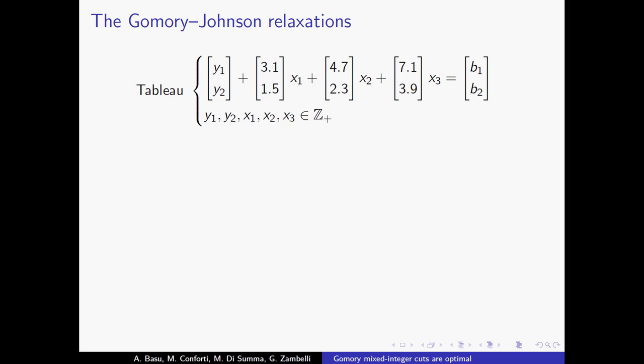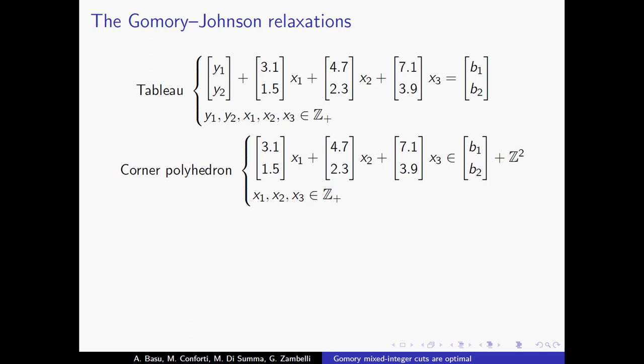Let me tell you only the few things you need to know about the Gomory-Johnson relaxation. When you solve a given IP problem you get some tableau, where y1 and y2 are the basic variables, written as some combination of the non-basic variables xi, each multiplied by some column of your tableau, with a right-hand side that is assumed not to be an integer vector. All variables have to be non-negative integers. A very famous relaxation is the corner polyhedron, obtained by forgetting that the y variables should be non-negative — you only remember they have to be integers.